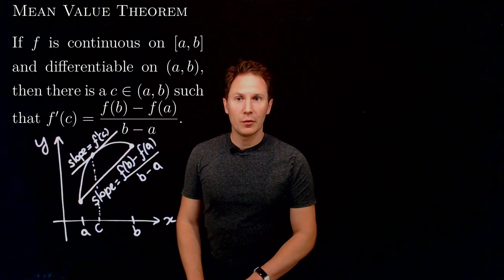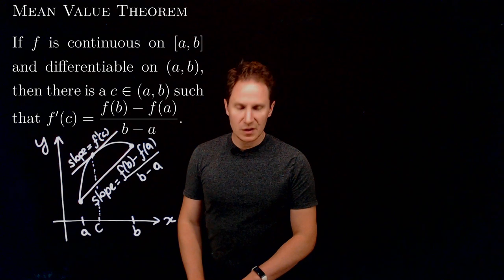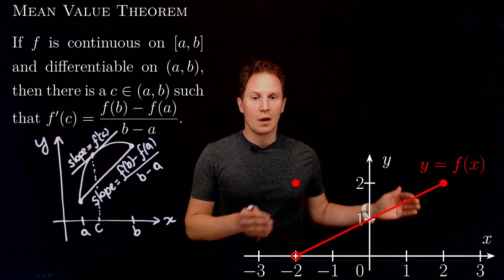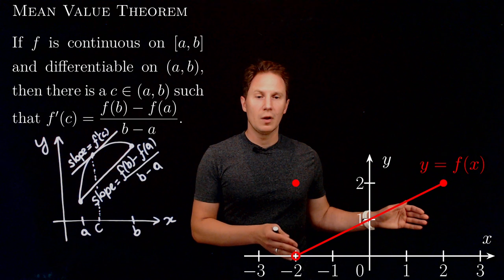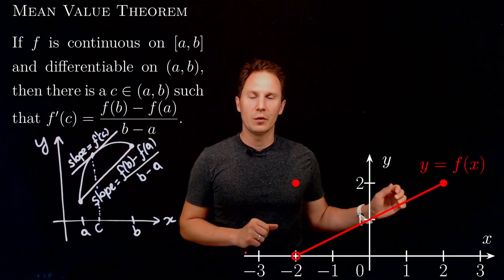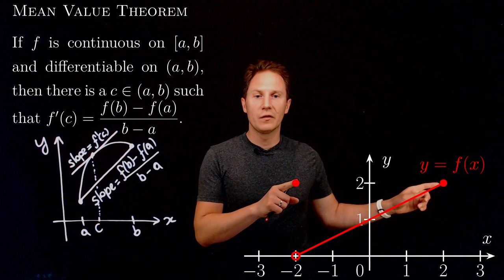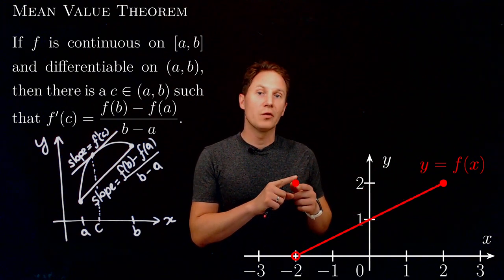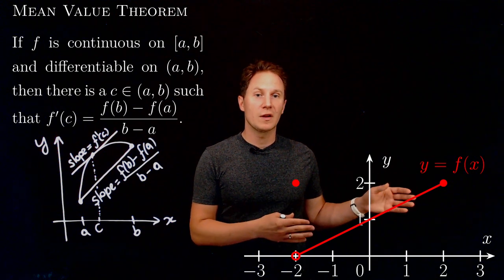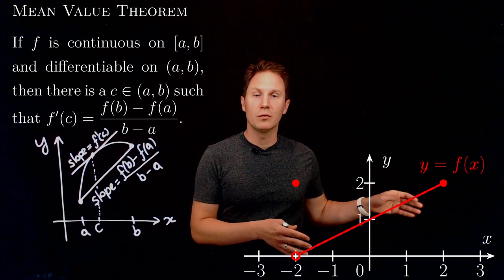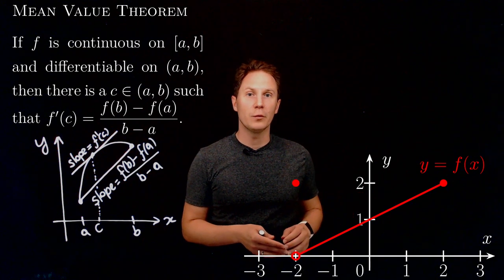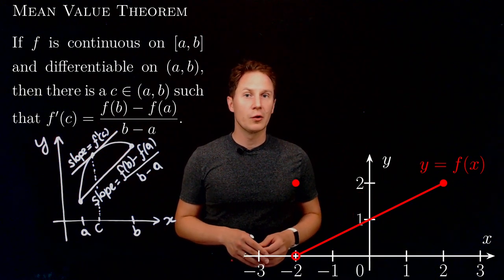To show why this is the case, let's first see what happens if we let go of continuity on the closed interval. We can have a function that is differentiable on the open interval but not continuous on the closed interval, having a hole discontinuity at one of the endpoints. The slope of the secant line connecting the endpoints is zero — a horizontal secant line — yet the derivative at every point between the endpoints is never zero; it's a constant positive value. This is why continuity on the closed interval is important.